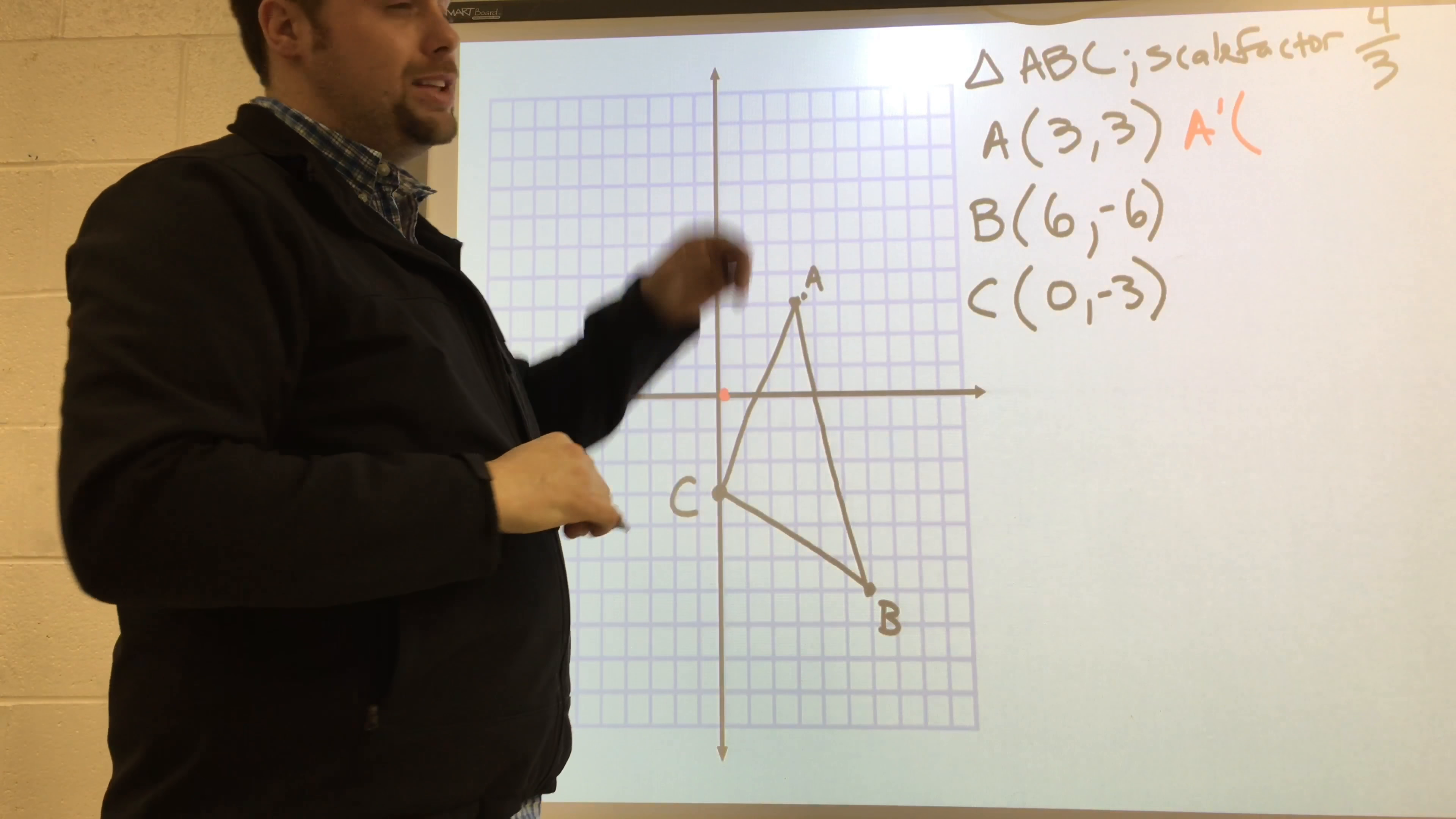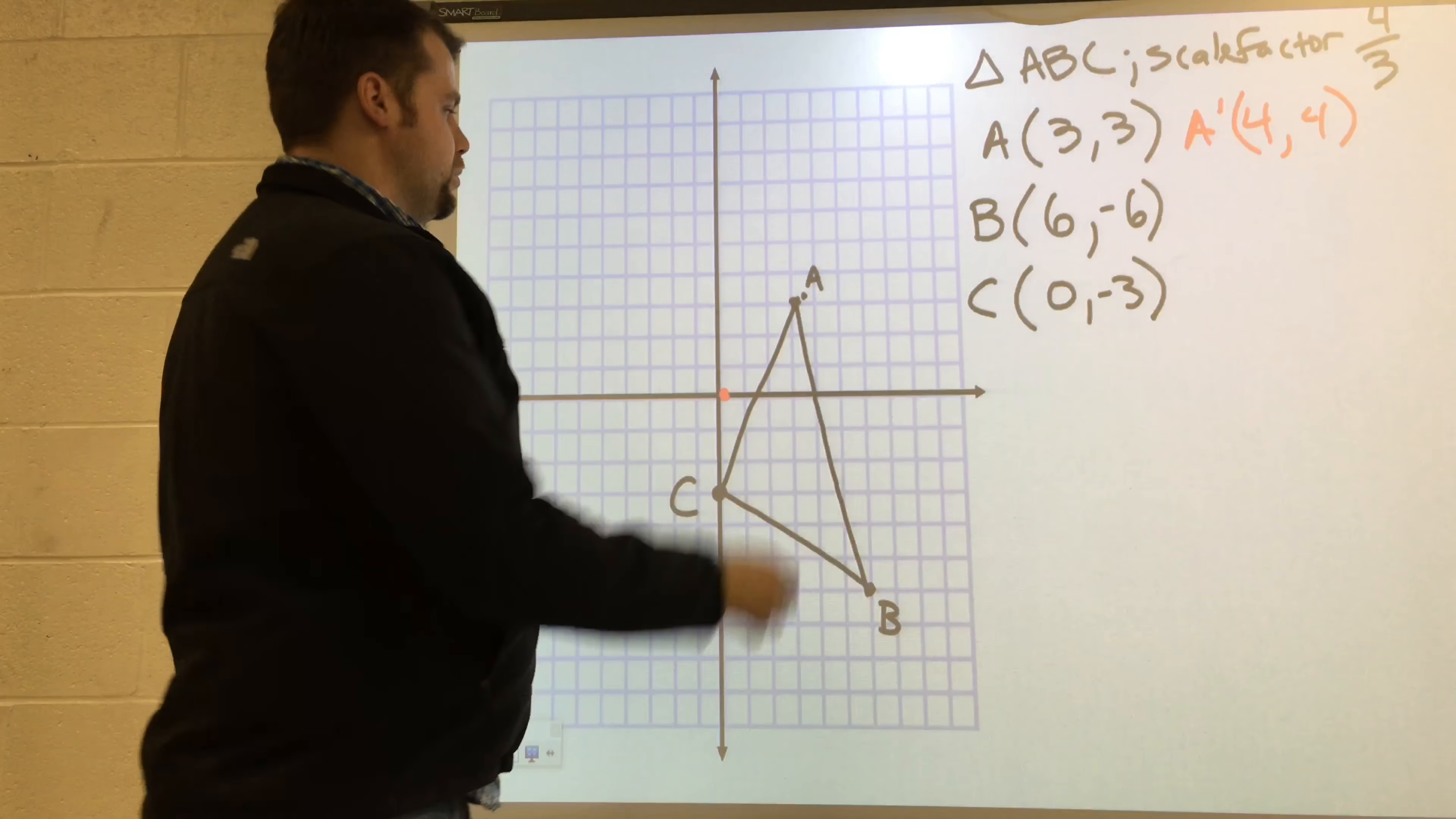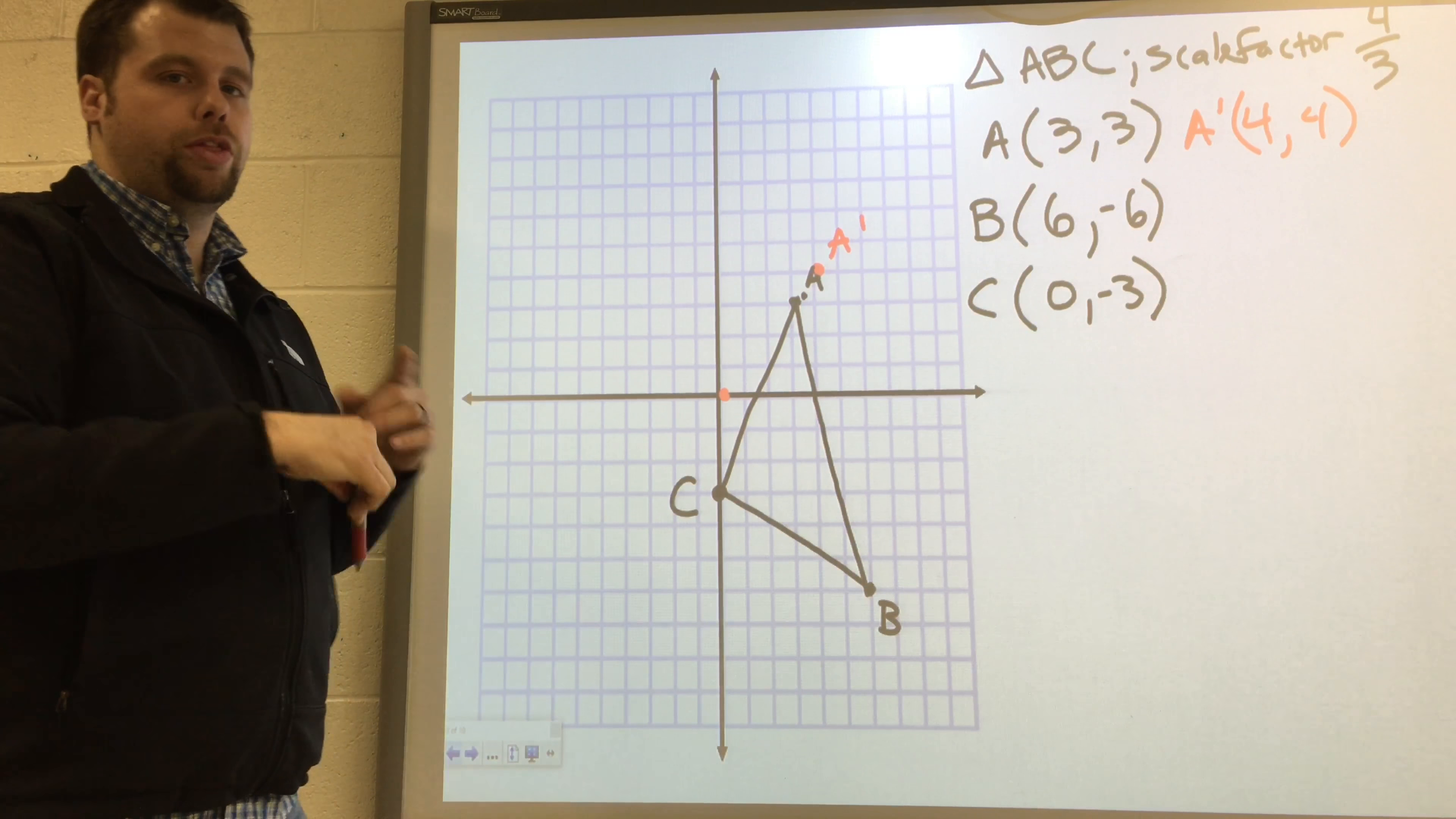If you take three times four-thirds, you get 12 over three, which is four. Take three times four-thirds again, I get four. So this point A, which was three, three, now becomes four, four. That's your A-prime. And you can see that that's a little bit further away from the center. It's four-thirds the distance.